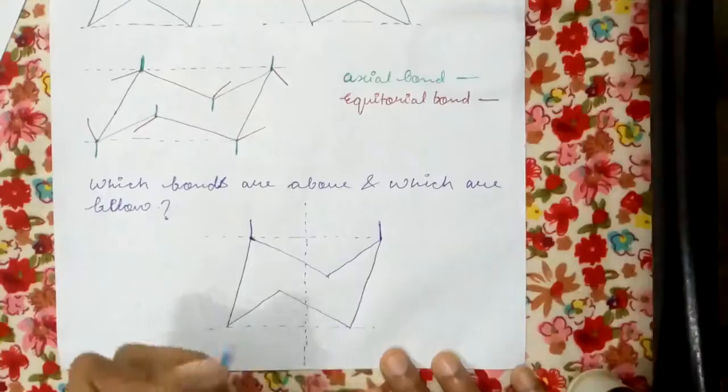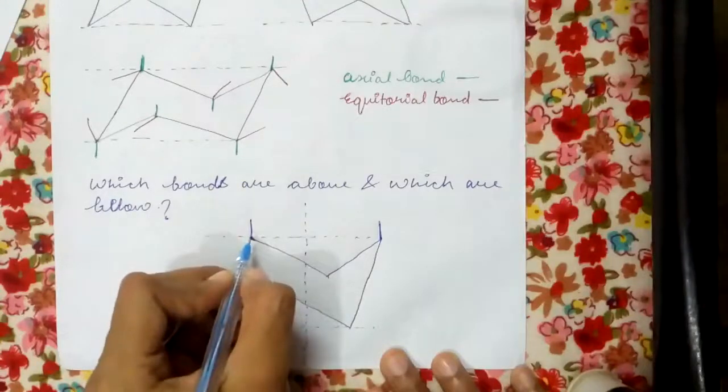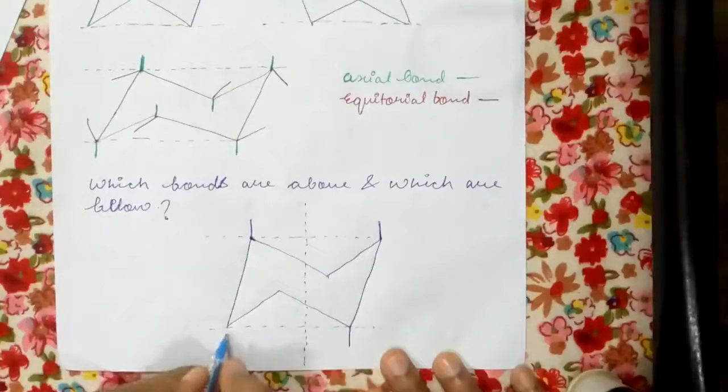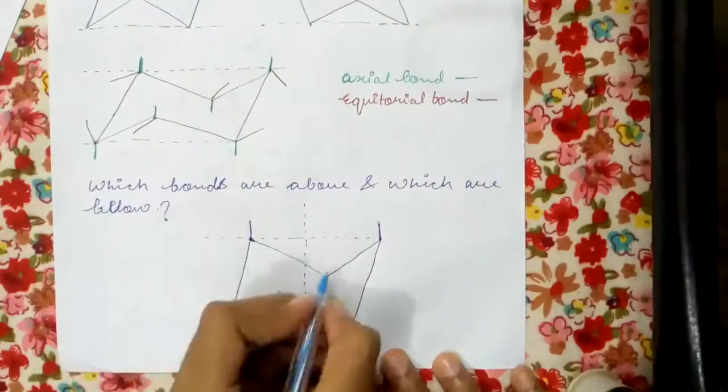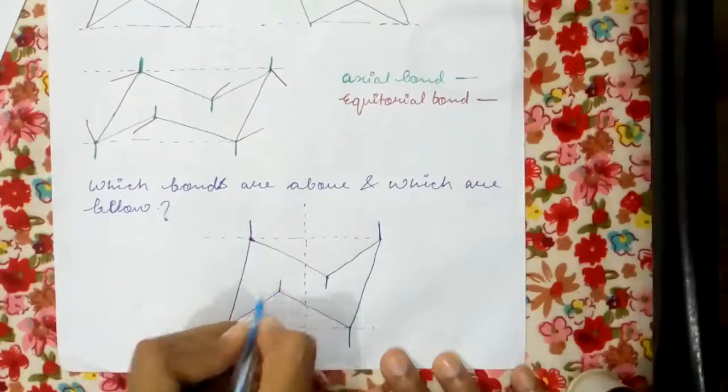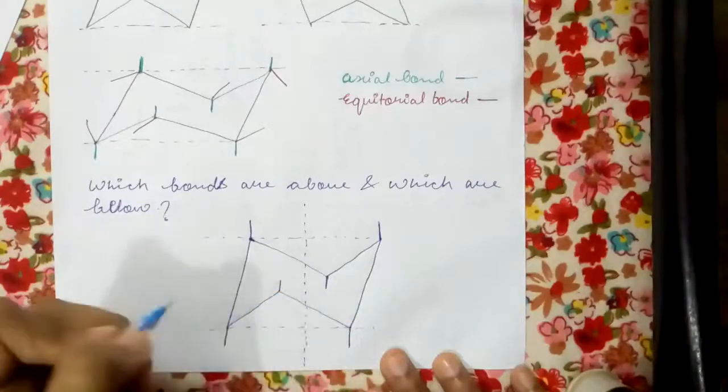Let us assume a vertical line, for example like this. It's not necessary to draw this dotted line every time - this is for our convenience if we are drawing it for the first time. So we draw parallel to it, the axial bond at each corner, similarly at this point also, at this carbon also. These are axial bonds which are parallel to a vertical line.